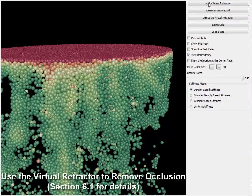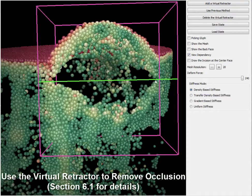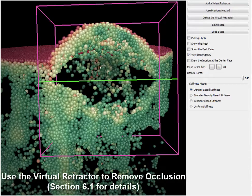Next, we show an example of using the virtual retractor to remove occlusion on the viscous fluid dataset. A hidden cluster behind the surface is revealed.